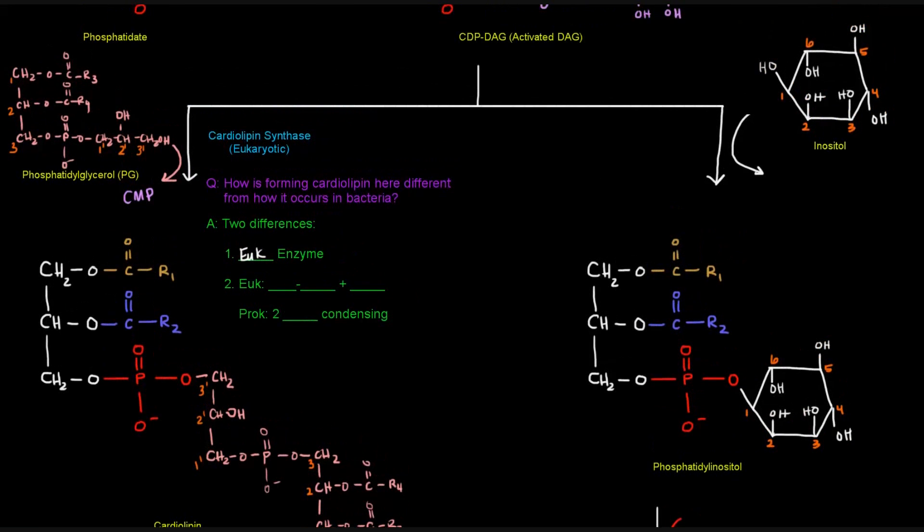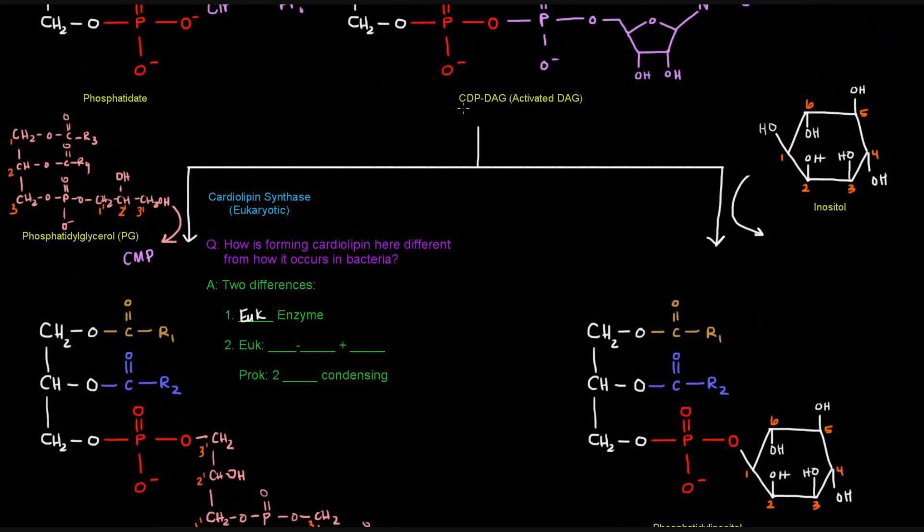Another thing is that here in eukaryotes, we started off with CDPDAG, and we added phosphatidylglycerol to get cardiolipin. Whereas in the prokaryotes, that's not what happened. We had two phosphatidylglycerols that condensed together to give cardiolipin. So I really wanted to mention that here as just a difference between the two.